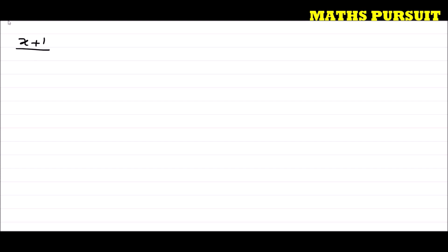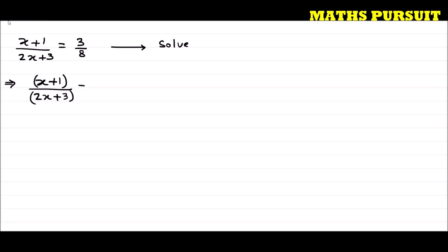The question has given us this equation: x plus 1 divided by 2x plus 3 is equal to 3 upon 8, and the question is asking us to solve this equation.